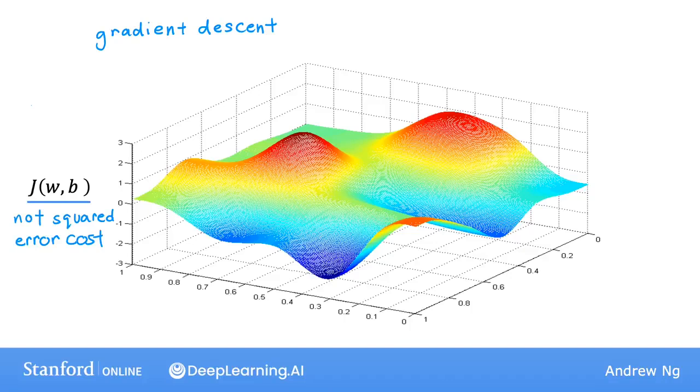This function is not a squared error cost function. For linear regression with the squared error cost function, you always end up with a bow shape or a hammock shape. But this is a type of cost function you might get if you're training a neural network model. Notice the axis.